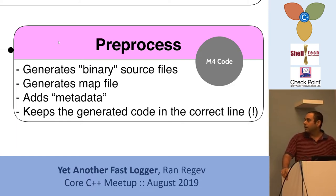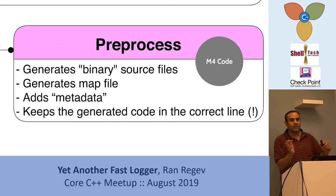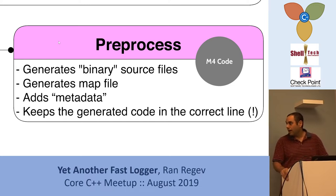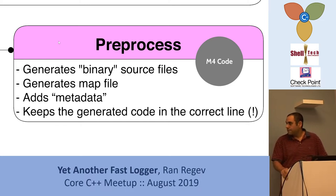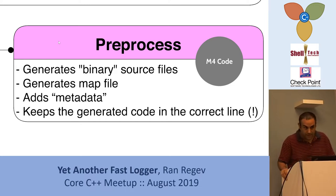The preprocessor itself — I used M4 to do it, maybe if we have time we'll see it. The preprocessor creates two things: it generates map files which map your text into binaries, into numbers. It adds some metadata on the messages, and it generates the map and the code with the correct binaries itself.